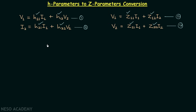What we will do is try to convert equations one and two into the form of equations three and four, and after that we will perform the comparison to obtain all four Z parameters. When you focus on equation number four, you will find it has three variables V2, I1, and I2 — and equation number two has the same variables V2, I1, and I2.